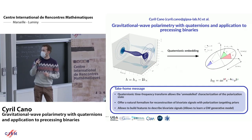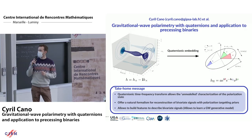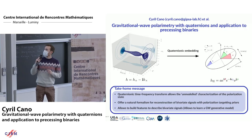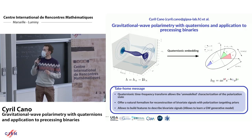To do that, we have a new mathematical tool. We define a complex signal H — a bivariate complex signal H — as H-plus minus i·H-cross. You have an example of a simulated one for binary black holes. The variation of the shape of the ellipse is due to variation of the orbital plane. We use a quaternionic embedding of H to describe the variation of the shape of the ellipse.